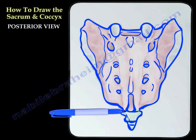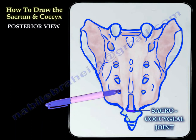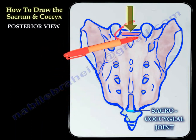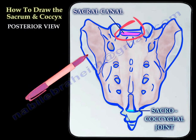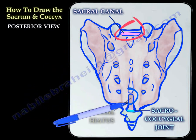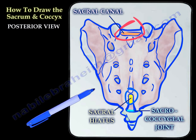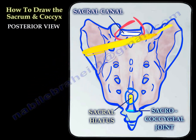We also have the sacro-coccygeal joint, the sacral canal, the sacral hiatus, and the sacral tuberosity or the ala of the sacrum.